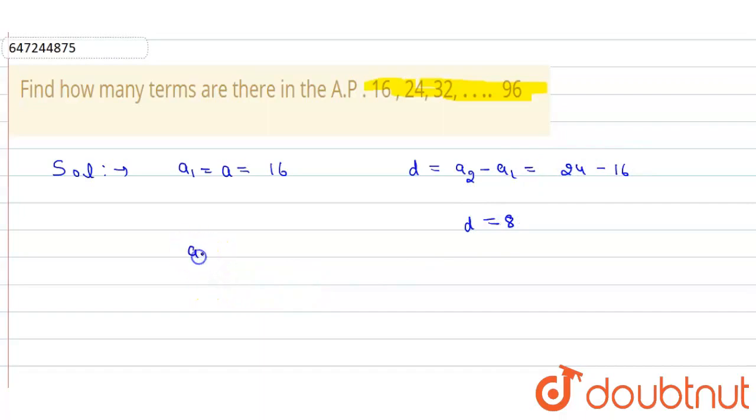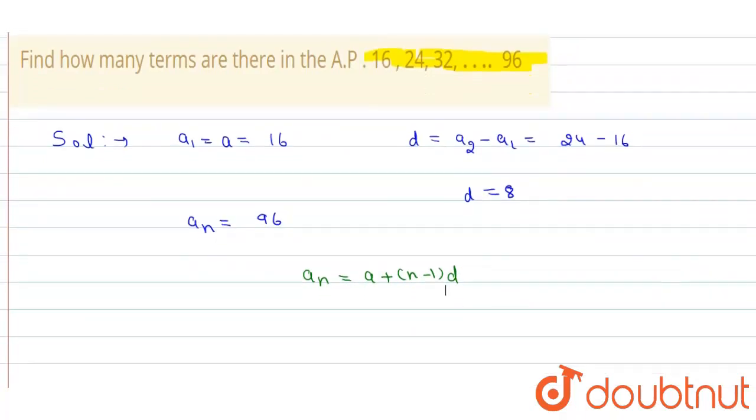And the last term, that is the Nth term, is given as equal to 96. So I have the formula for the Nth term: An is equal to A plus (n minus 1) times D. So I have all values to put here.